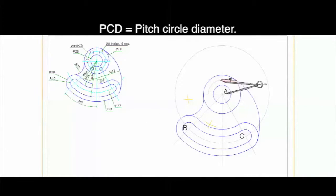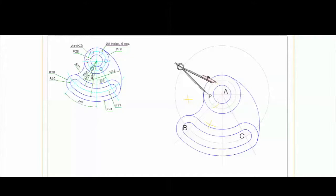Now we'll draw diameter 44 which is PCD and we'll divide it into 6 equal parts. We'll mark point P and Q as shown in the figure and we'll take radius PA and cut on both the sides and take QA on both the sides and we'll draw the required circle.